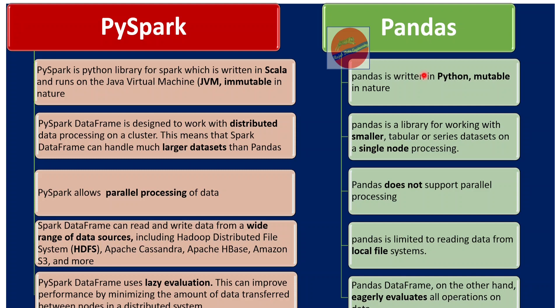What is immutable? Immutable means whenever we create a dataframe using PySpark, it cannot be changed. Whenever we add a column or apply a transformation, internally it creates another dataframe — that is called immutable. This helps with fault tolerance: whenever we have to rerun a process, we don't need to worry about data cleanup because it is immutable in nature. Based on lazy evaluation, it will just restart the dataset from the beginning. That is not the case with Pandas.